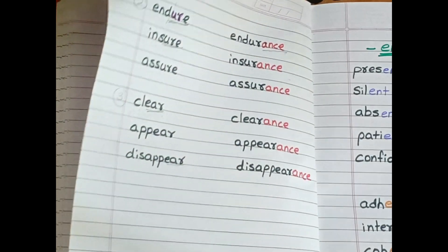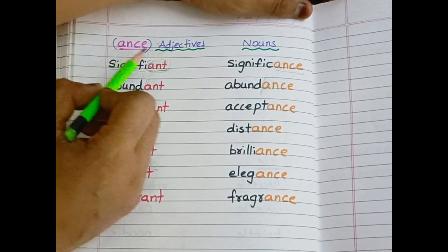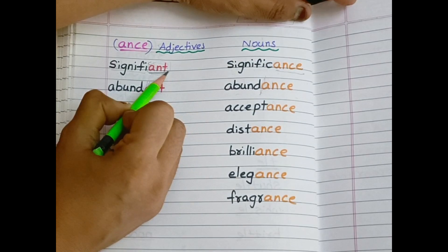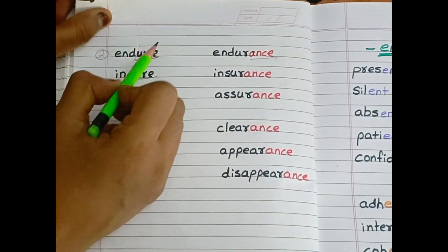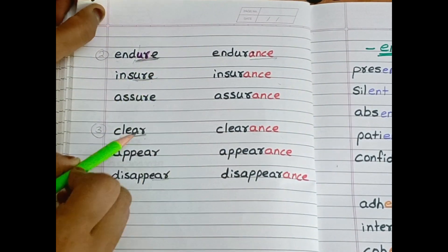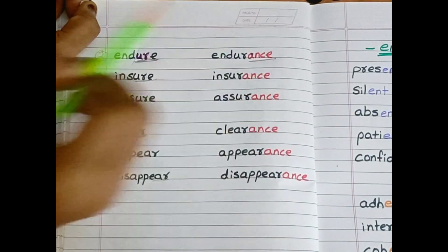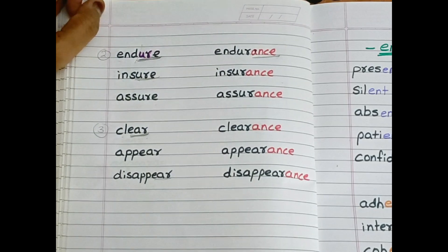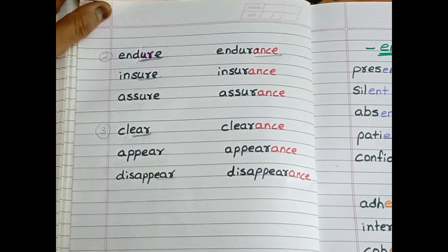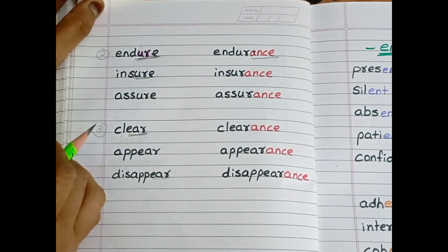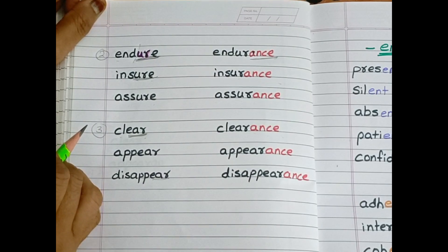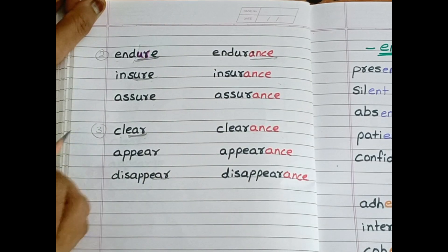Let us revise the rules. If the word ends with a-n-t, and if the word ends with u-r-e or e-a-r, add a-n-c-e. This is the rule, and we know that many words have exceptions also.